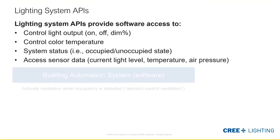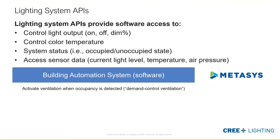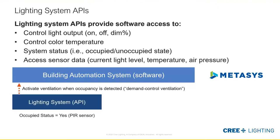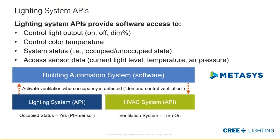One of the biggest applications and lowest-hanging fruit we have is within the building automation system — systems like Metasys, Trane Tracer, or Honeywell. There's a whole market of these systems already installed in buildings, mainly to operate HVAC. A good example: we want to activate the ventilation system in a room when occupancy is detected — in the HVAC world that's called demand control ventilation. Our lighting system API tells us whether the room is occupied, and then the building automation system sends a command to the HVAC system's API to turn on ventilation — opening a damper, turning on ventilation fans — using those APIs to do that.